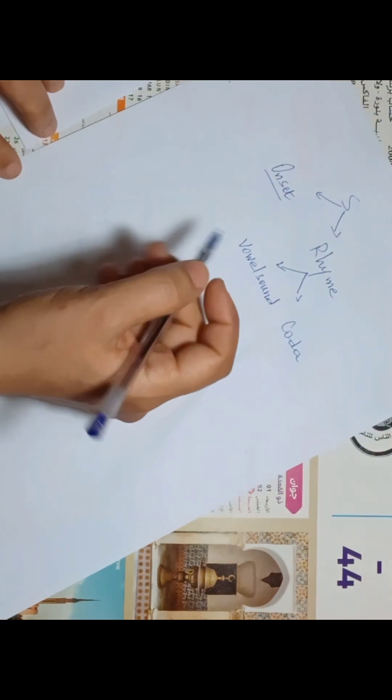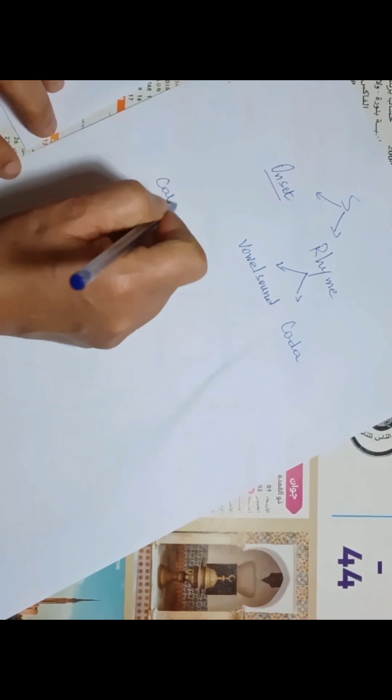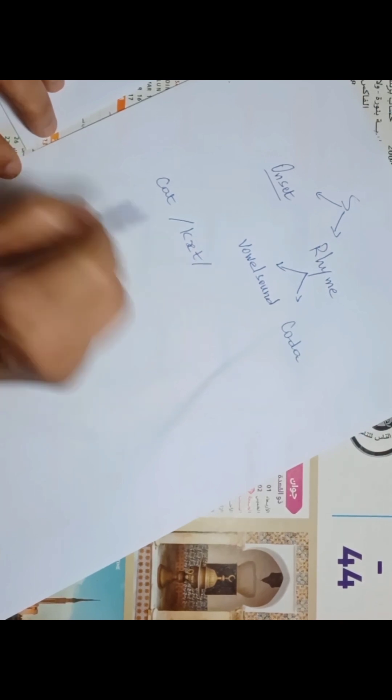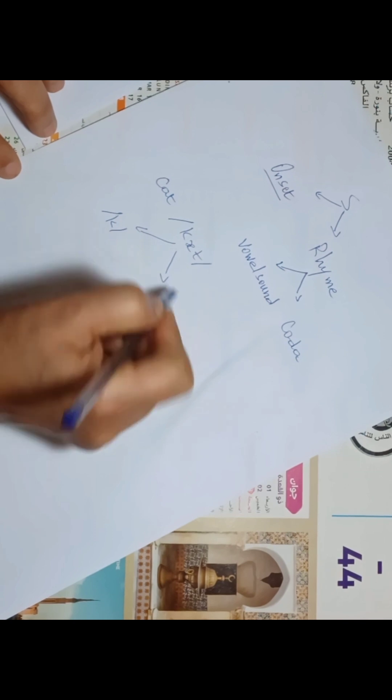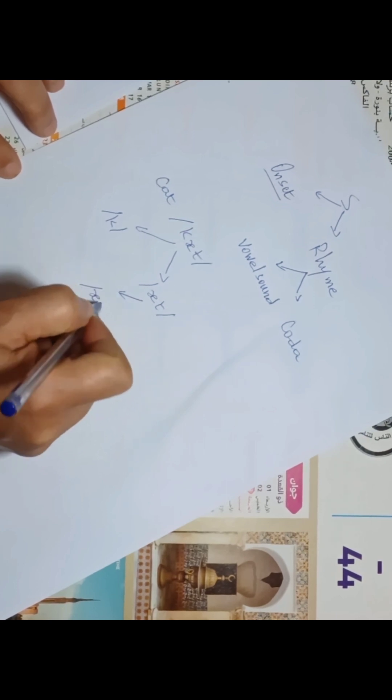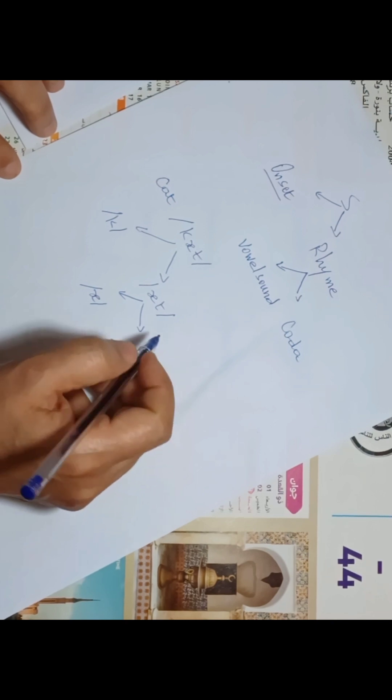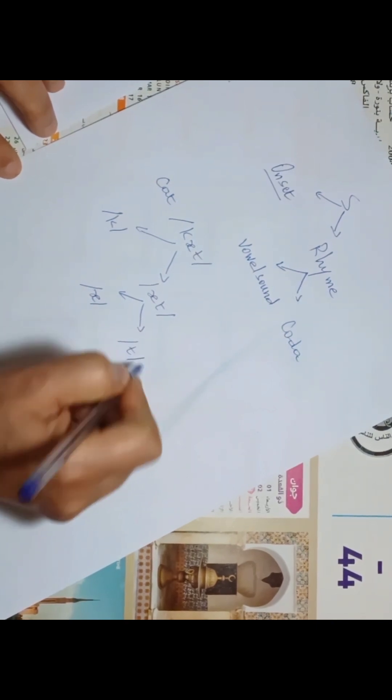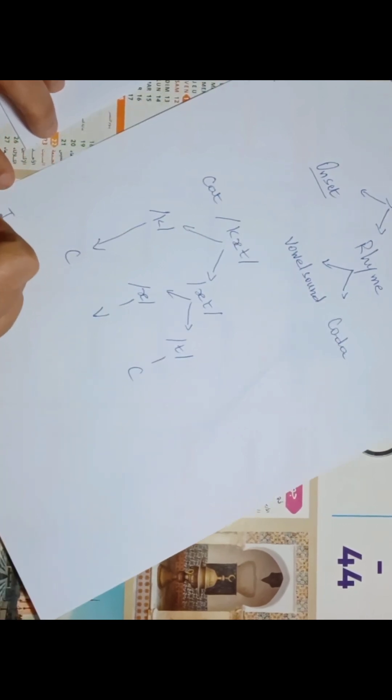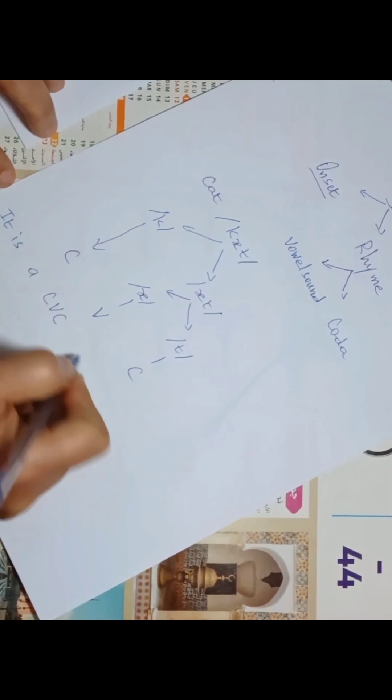Let's take an example. First, the word 'cat'. The first step is to transcribe the word. It is composed of /k/, /æ/, and /t/. Here we have the onset /k/, and the rhyme /æt/. Then we have the vowel sound /æ/ and the coda /t/, which is composed of one consonant sound. So here we have consonant sound, vowel sound, consonant sound. This syllable is a CVC syllable.